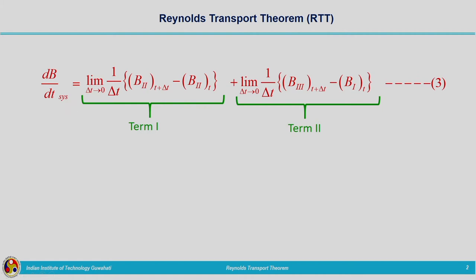In the previous lecture we started with the derivation and the expression came out as follows. We considered a fluid flow field, and within that we considered a control mass. For the analysis point of view under the Eulerian perspective we considered a control volume. At time t, this control volume and the system were coinciding; after a small interval of time delta t, the system moved in the flow direction, and we were trying to find the relationship for the time rate of change of extensive property.